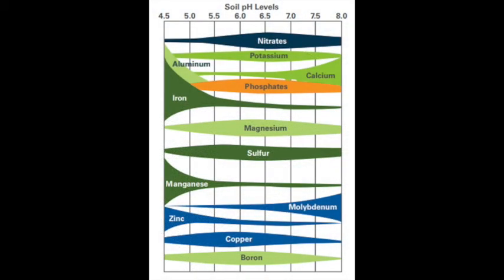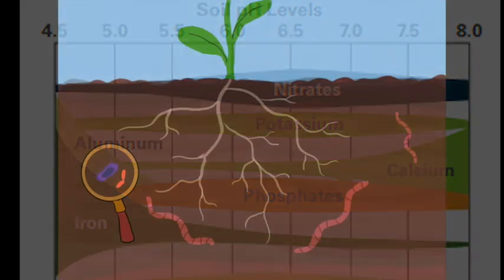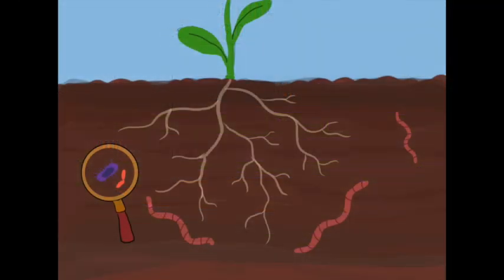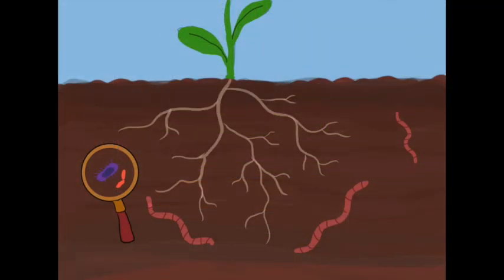The second way that pH influences the soil is that a low pH can make aluminum and iron too available, and these elements can hurt plants when they're in high concentration. And lastly, pH affects the activity of the soil microbes, and this in turn can affect nutrient cycling and disease aspects.